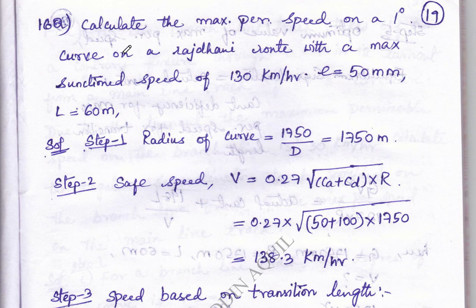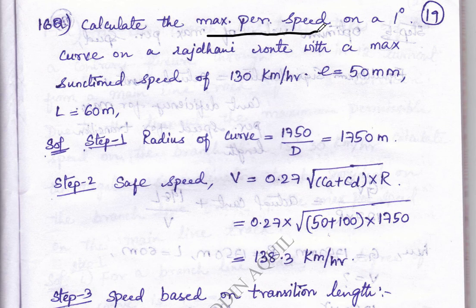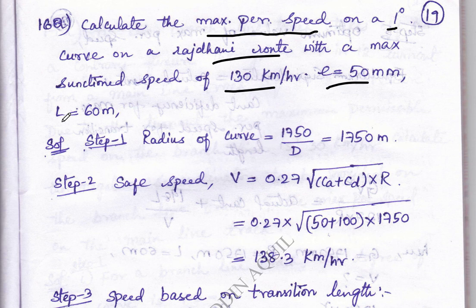Dear students, in today's problem of railway engineering we will solve different types of problems. The first problem requires us to calculate the maximum permissible speed for a 1-degree curve on the Rajdhani route, where the maximum speed is 130 km/h, E is 50 mm, and the transition length L is 60 meters.